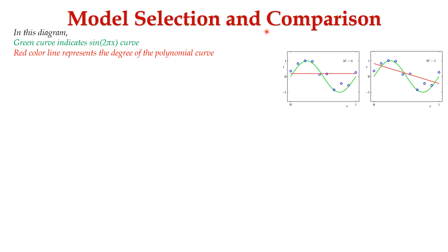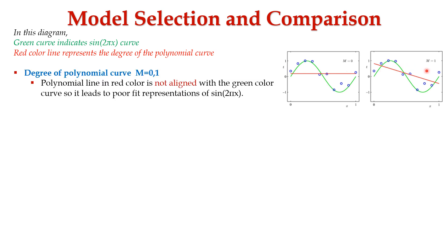Now let's learn about model selection and comparison. In this diagram, the green color curve represents the sin(2πx) curve, and the red color line represents the degree of the polynomial curve. In the first diagram, the degree m=0, and in the second diagram, the degree m=1. Here, the polynomial line and the curve sin(2πx) are not aligned properly, leading to a poor representation. The error value is very high.